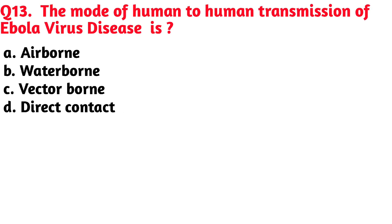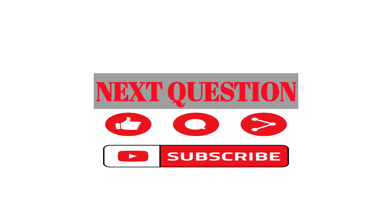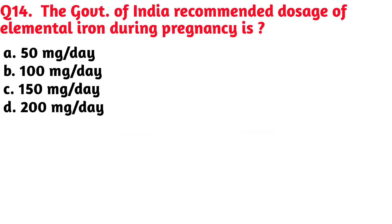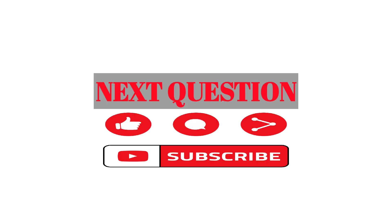The mode of human-to-human transmission of Ebola virus disease — Option D, direct contact, is the correct answer. Next question: the Government of India recommended dosage of elemental iron during pregnancy is — Option B, 100 mg per day, is the correct answer.